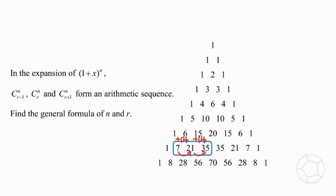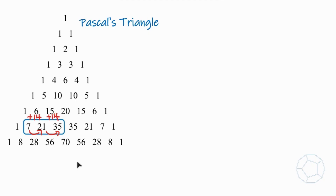In the expansion of bracket 1 plus x to the power of n, nCr minus 1, nCr, and nCr plus 1 form an arithmetic sequence. Find the general formula of n and r. Hi there, welcome to my channel Magusiasm. Today I want to share with you this interesting question of binomial coefficients and arithmetic sequence. Without further ado, let's get started.